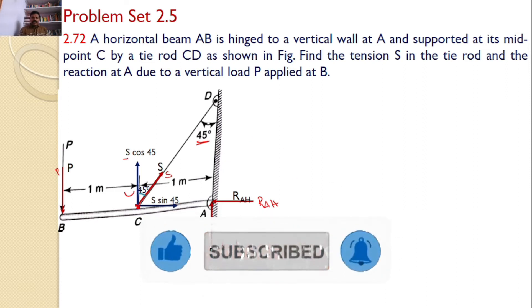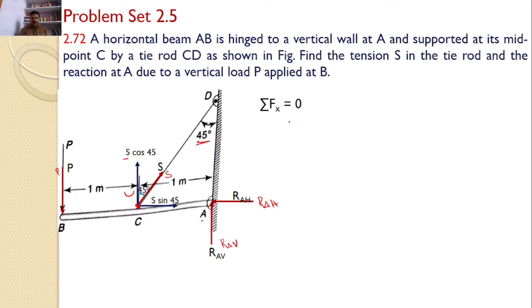Now, let us apply the equilibrium condition. Sigma Fx equals 0. If I use Sigma Fx equals 0, there are two forces acting along x-axis. That means RAH equals S sin 45. And Sigma Fy equals 0. There are three forces acting along y direction. Hence, RAV plus S cos 45 equals P.